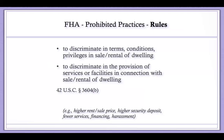The next category — rules — corresponds to subsection B, which makes it a discriminatory housing practice to discriminate in the terms, conditions, or privileges in the sale or rental of a dwelling, or in the provision of services or facilities. This encompasses situations where housing is sold or rented but, because of someone's membership in a protected class, they're offered it at a higher sale price, higher rent, higher security deposit, fewer services, or less favorable financing. Harassment can also be claimed here when the terms or conditions of tenancy are discriminatory based on protected class status.